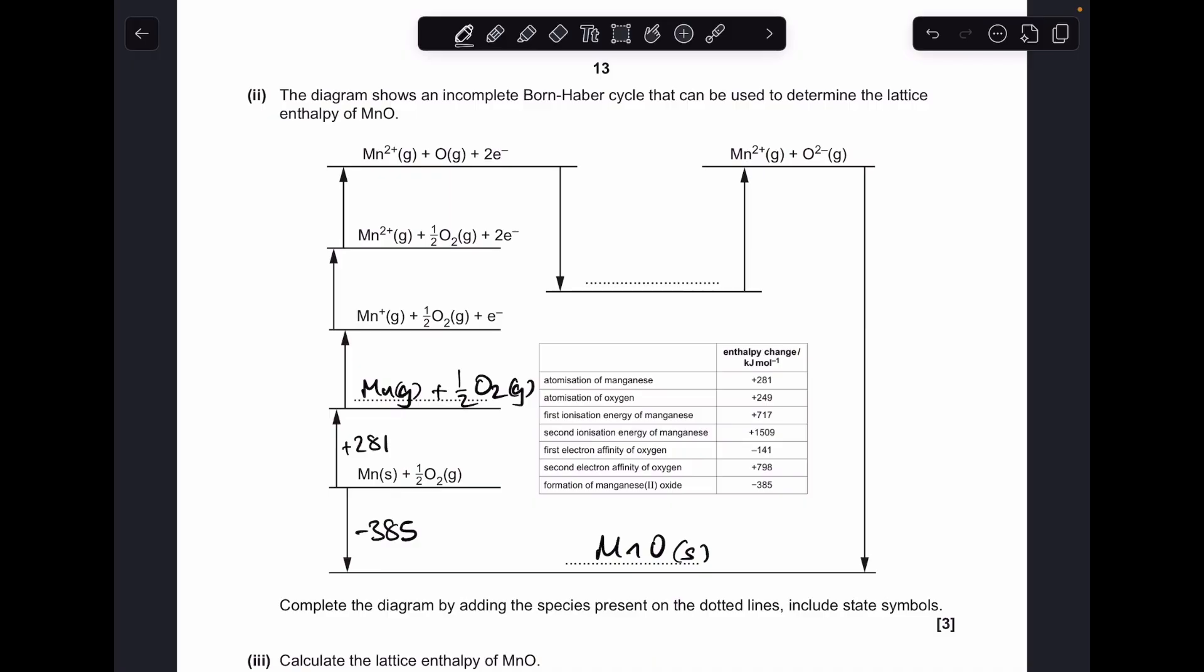And the next process, Mn gas to Mn⁺ gas plus that electron, that's the first ionisation energy for manganese. That's +717.